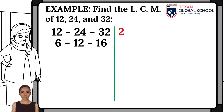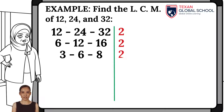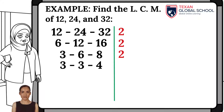Again divide by 2, since at least one number is divisible by this prime number. Write the 2 on the right side and the results of the division on the left side: 3, 6, and 8. Once again, at least one number is a multiple of 2, so put the 2 on the right side and write the results on the left side. We can see that 3 is not divisible by 2, so it is left as is. Thus we obtain 3, 3, and 4.